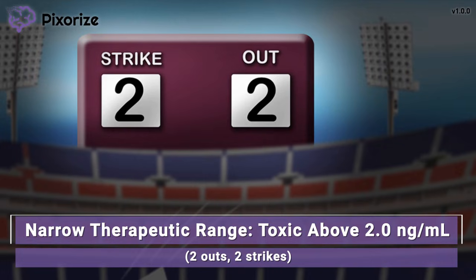Too low of a dose means the drug will fail to achieve its effect, while too high of a dose will cause side effects. Since the sweet spot in the middle is so narrow, most patients on Digoxin will experience a lot of side effects. For the NCLEX, remembering the maximum dose of Digoxin — 2 nanograms per milliliter — is extremely high yield.